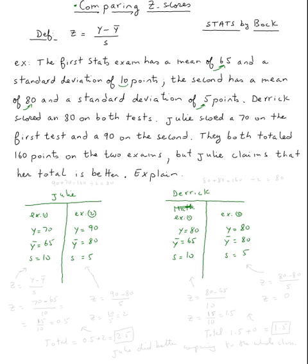Alright, so Julie claims that her total is better. Of course, if we do the average of 70 and 90, and 80 and 80, both of them have got an 80. Right? 70 plus 90 is 160 divided by 2. For Julie, the total is 90 plus 70, which is 160, so you divide by 2, you get 80. Same thing for this one, 80 plus 80 is 160. If you divide by 2, you get on average 80. So it looks like they did as good, but actually we're going to compare the z-scores.